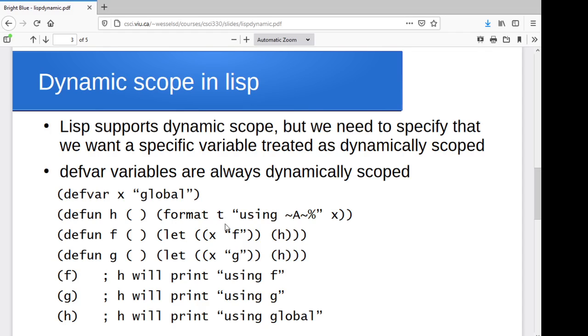So for instance, again, if we've got a function h where here we're going to print x, but h doesn't have an x, we're going to have a function f that creates a local variable x and calls h, and we're going to have a function g that creates a local variable x and calls h.